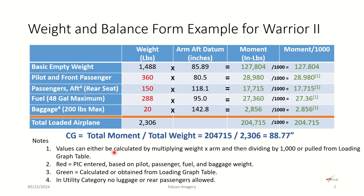Values can be calculated by multiplying weight times arm and then dividing by 1,000, or we can pull them from a loading graph table. The red items are what the pilot in command enters about the items in the plane; the green is what's calculated. We're doing this for the normal category. In a utility category application, there could be no luggage or rear passengers allowed if we're operating in the utility range versus the normal range.